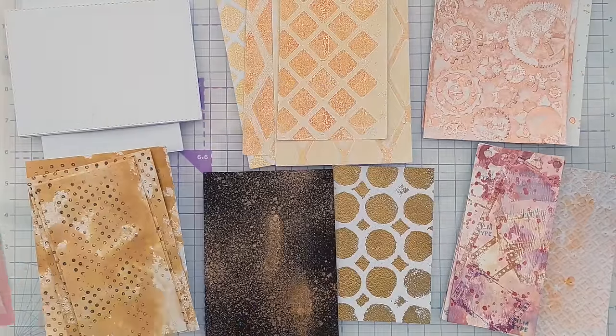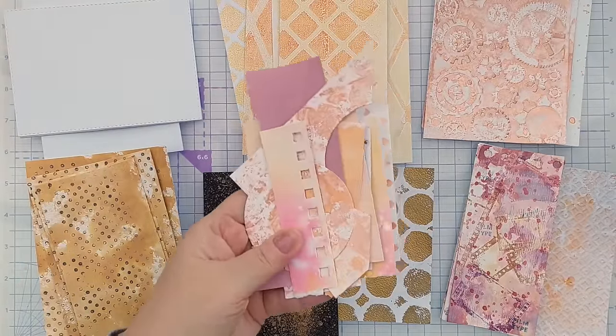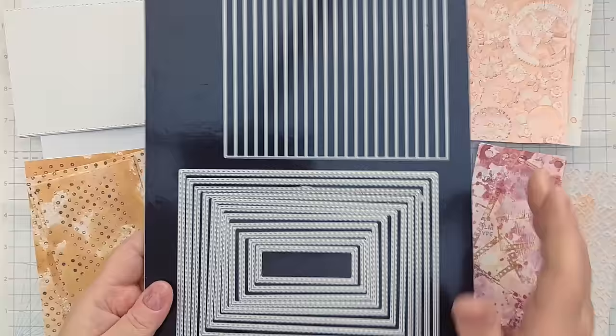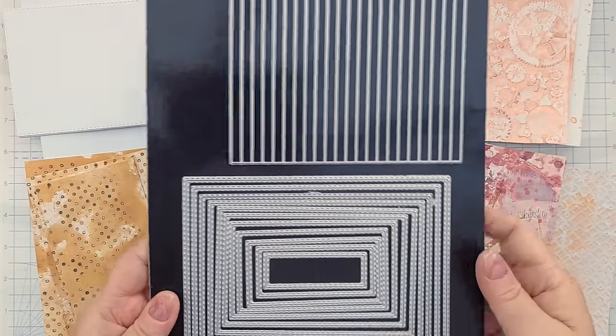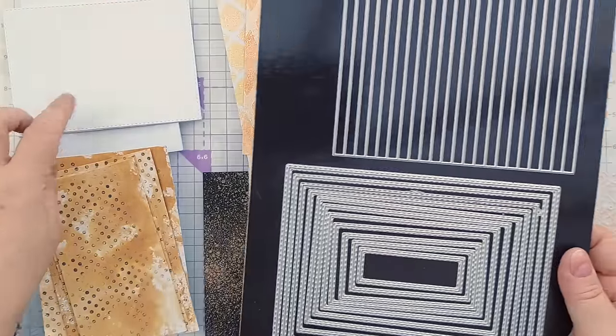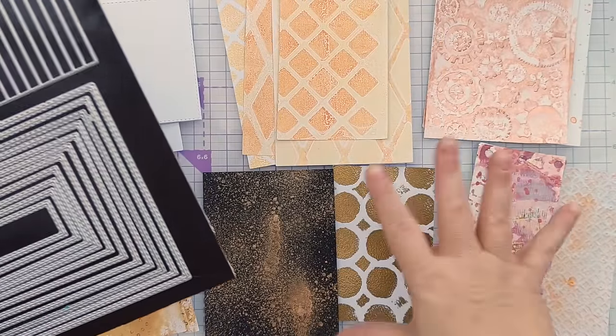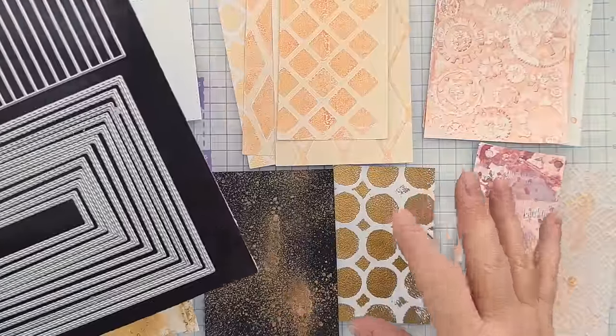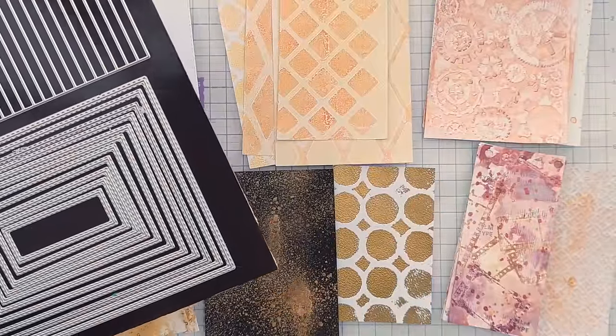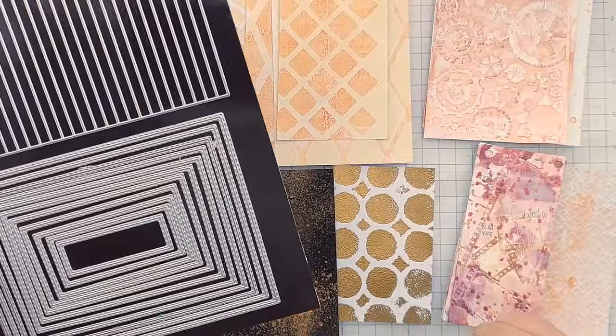I've sorted these out into my larger scraps and my smaller scraps, and what I'm going to do today is use my stitched rectangle dies - one of which I use to cut the panels - and cut lots of rectangles from them.